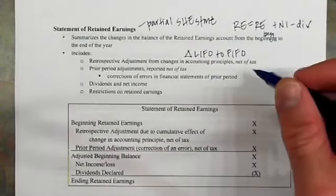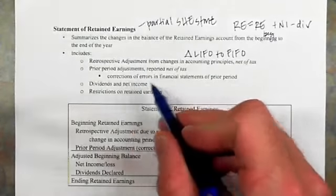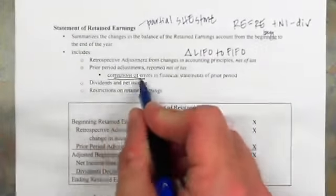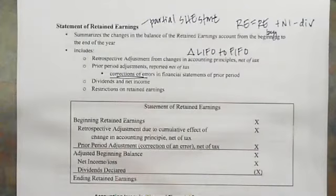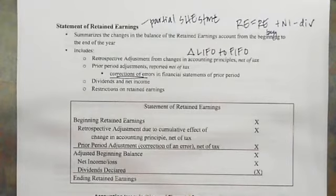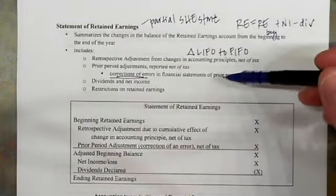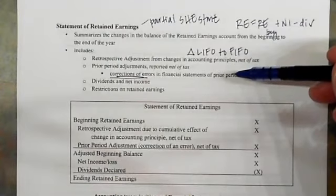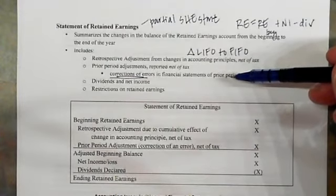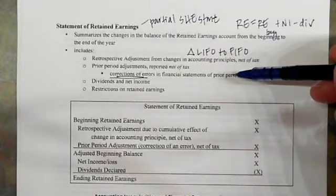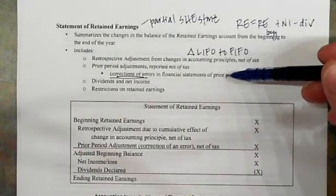Another item included is prior period adjustments — corrections of errors. If an adjusting entry was forgotten or an error occurred, we make that discovery in the current year, regardless of when the error was originally made. Say we made an error five years ago — it doesn't matter, we still put that error correction in this year's retained earnings.